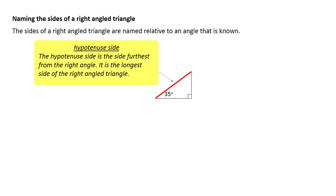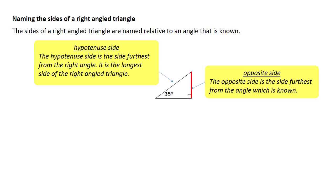The hypotenuse side is the side which is furthest from the right angle — it's the longest side of the right angled triangle. The other two sides are named relative to an angle which you know. In this triangle, we know the angle is 35 degrees. The side that is furthest away from that angle is given the name the opposite side. And the other side, the side which goes together with the hypotenuse to make up the angle which you know, is given the name the adjacent side.